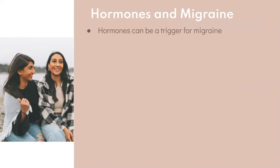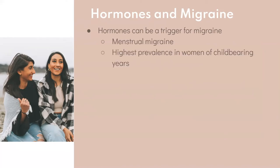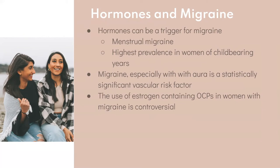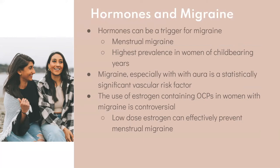Hormones definitely play a major role in migraine. One of the reasons why women develop migraine at a three-to-one rate more than men is specifically because women have fluctuations of hormones throughout the month and men don't. There are subtypes of migraine such as menstrual migraine that are directly related to hormonal changes. The highest prevalence of migraine in women is during reproductive ages — often the first migraine develops around the time of first period, and women can sometimes age out of migraine as they approach menopause.